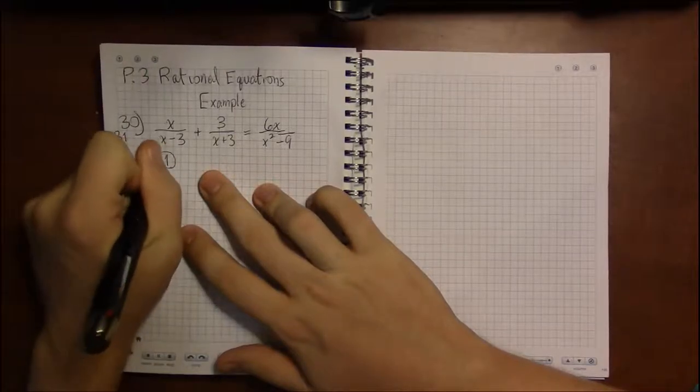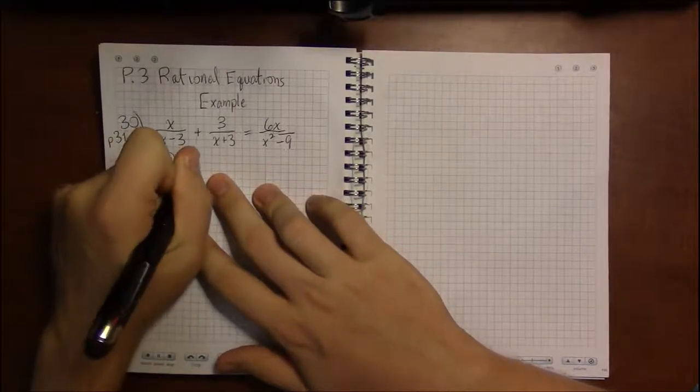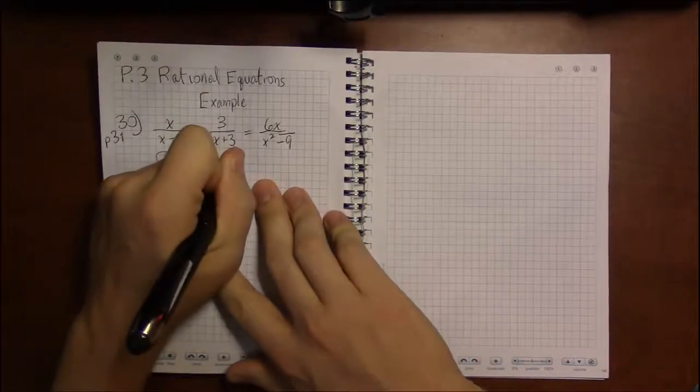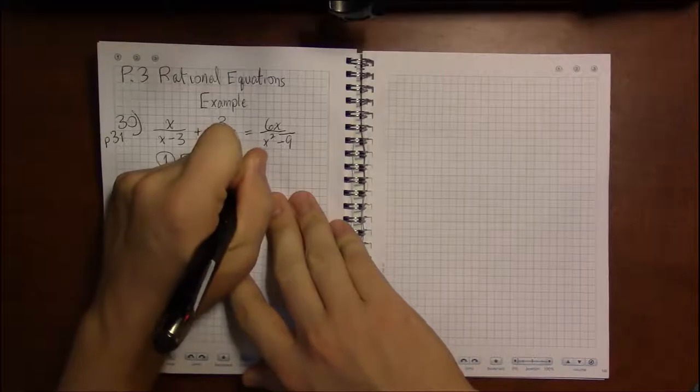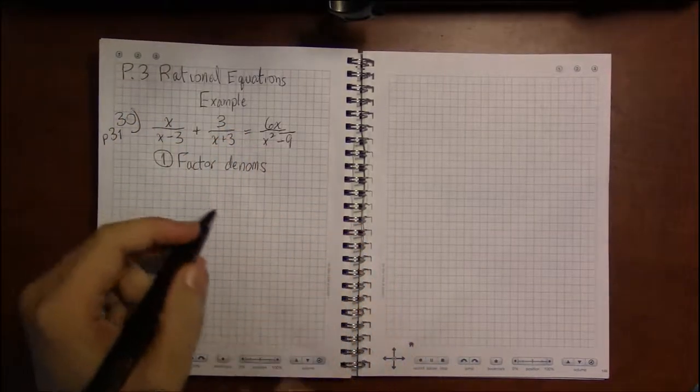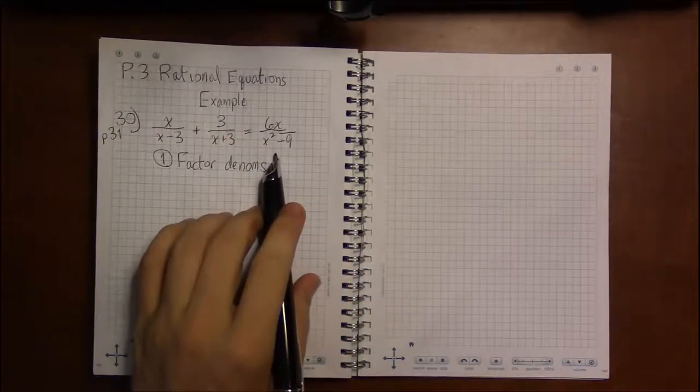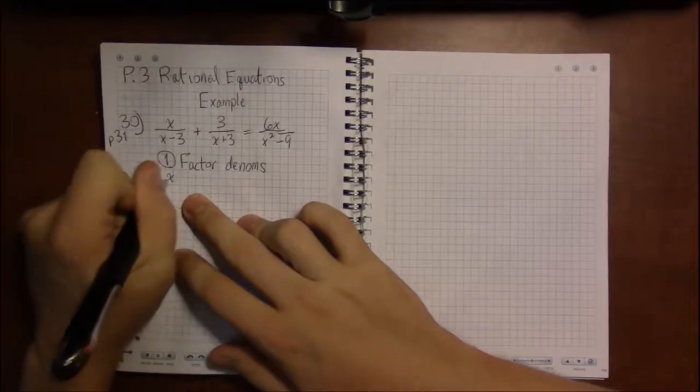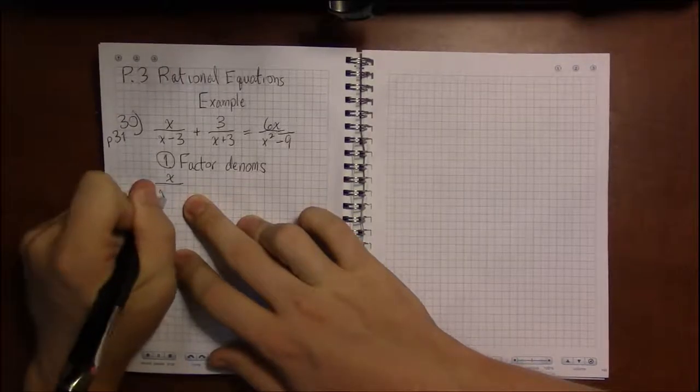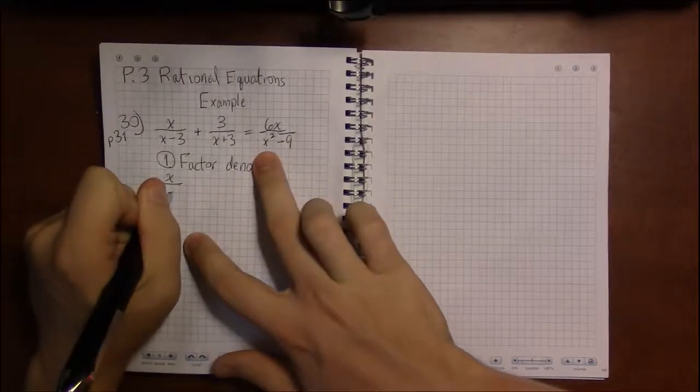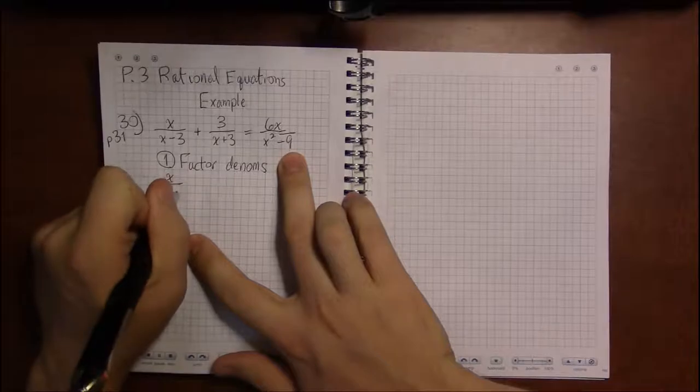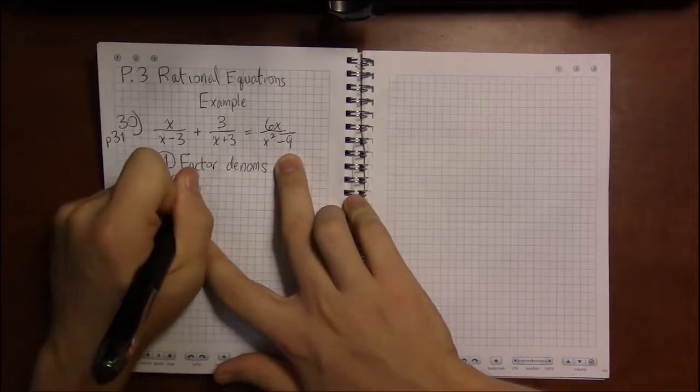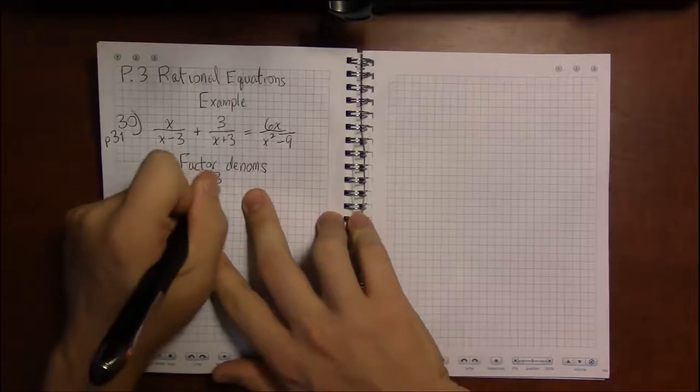So we're going to have to factor all of the denominators, and the first two are about as factored as you can get. The last one, the one on the right, the x squared minus 9, that's what we call a difference of squares. That is x squared minus 9 is 3 squared, so it's x squared minus 3 squared, and that has a special factorization.